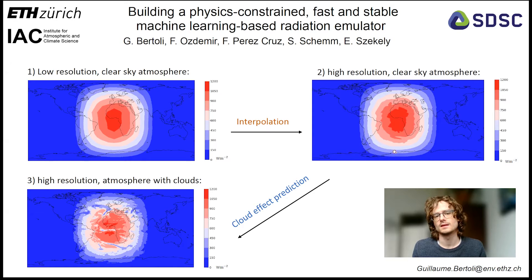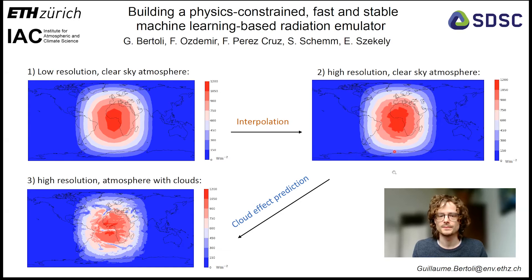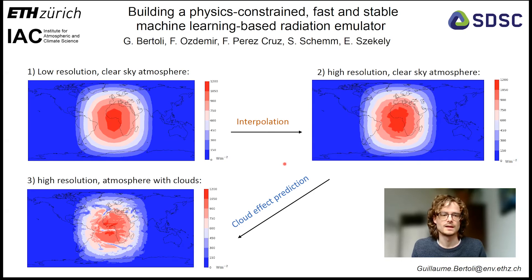We perform this interpolation using Gaussian processes with input features: latitude, longitude, and the specific humidity at each atmospheric layer. Finally, we predict the effect of clouds on radiation using random forests.